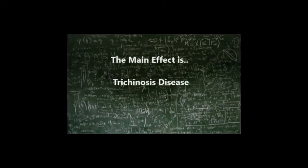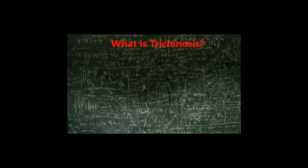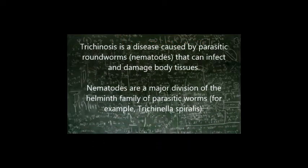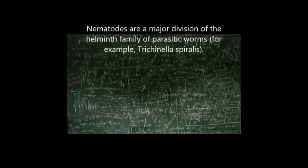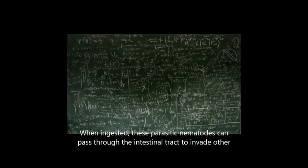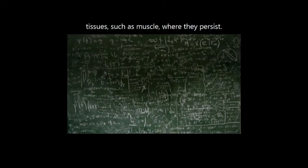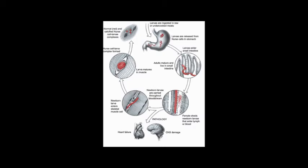The effects of Trichinella spiralis — the main effect is trichinosis disease. Trichinosis is a disease caused by parasitic roundworms that can infect and damage body tissues. Nematodes are a major division of the helminth family of parasitic worms, for example Trichinella spiralis. When ingested, these parasitic nematodes can pass through the intestinal tract to inhabit other tissues. The Trichinella spiralis are released from the stomach, entering the small intestine and carried throughout the bloodstream. It can cause damage to the heart, brain and muscle cells.